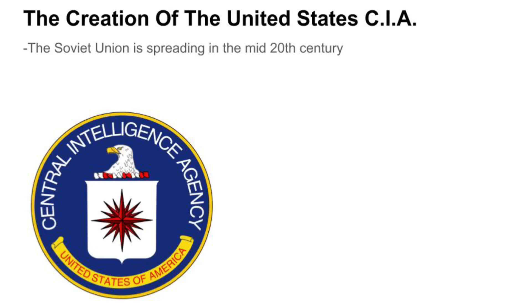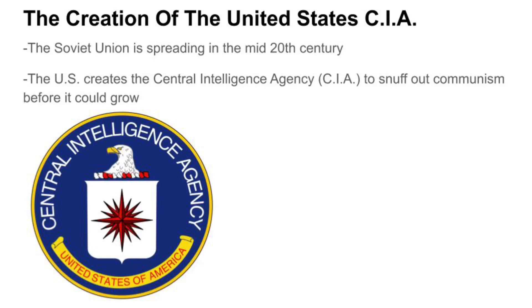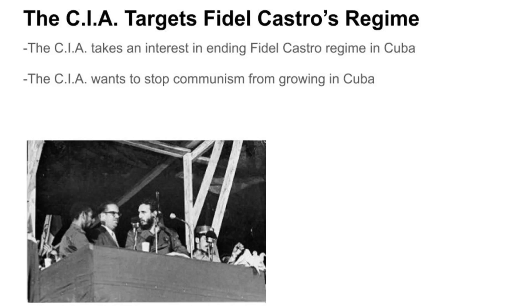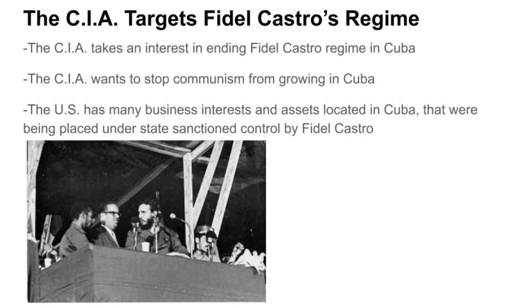With the spread of the Soviet Union in the mid-20th century, the United States created the Central Intelligence Agency, or CIA, to help snuff out communism before it could grow. The CIA took particular interest in ending Castro's regime for two main reasons: first, Cuba was communist; and second, the U.S. had many business interests and assets located in Cuba. U.S. officials were extremely displeased by Castro's decision to place all U.S. businesses and corporations under state-sanctioned control.